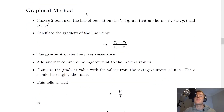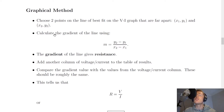For the graphical method, the first thing you want to do is choose two points on the line of best fit on the voltage-current graph that are far apart. This gives you two points, x1, y1 and x2, y2. You would then use those two points to calculate the gradient of the line using m equals y2 minus y1 over x2 minus x1, which you might remember from maths. The gradient of the line gives resistance.